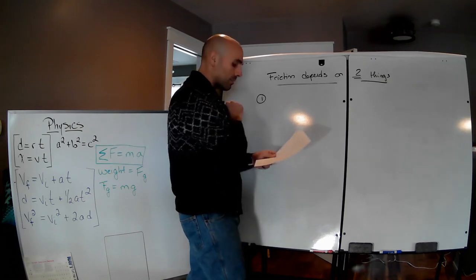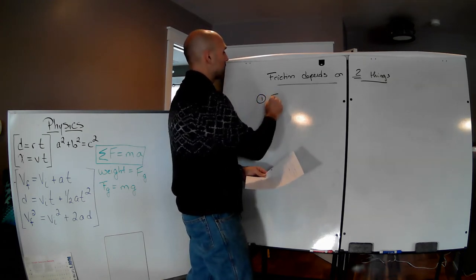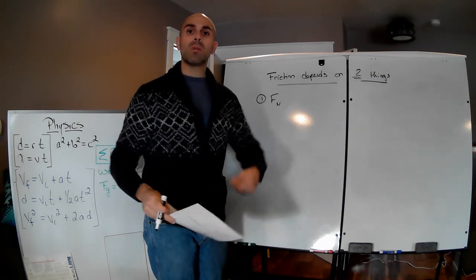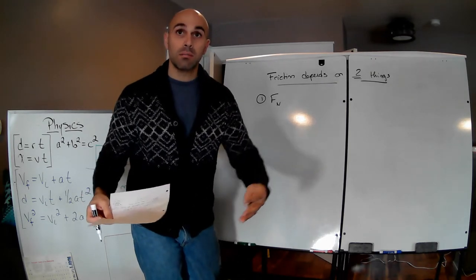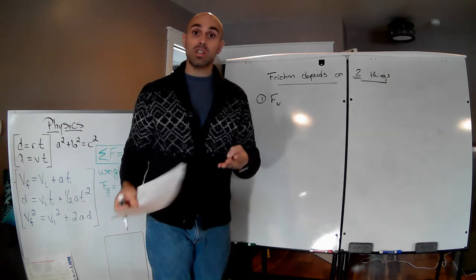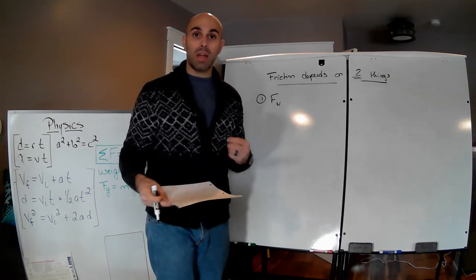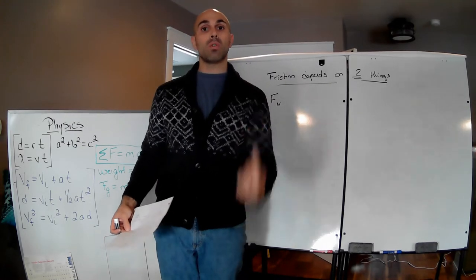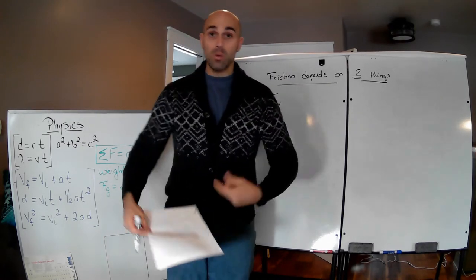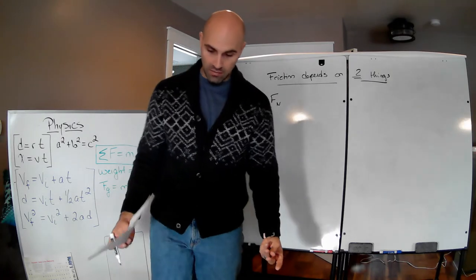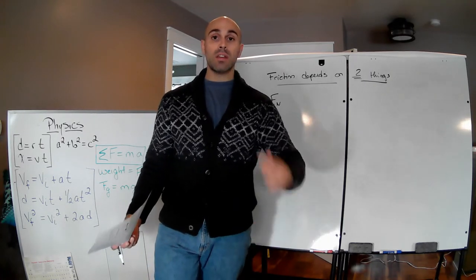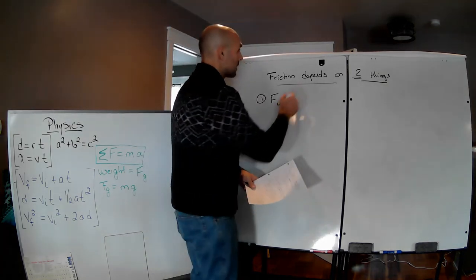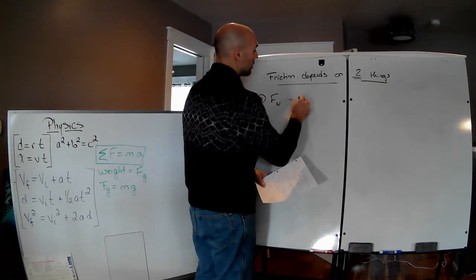Number one, friction depends on the normal force, Fn. I know you've seen this before. What is a force that everything has? It's gravity. And if it's touching a surface, it also has the normal force. I'm standing on the ground right now — I have gravity pushing down and the normal force pushing back up. You're sitting in a chair — gravity pushes down, the normal force pushes up. Friction depends on the normal force.